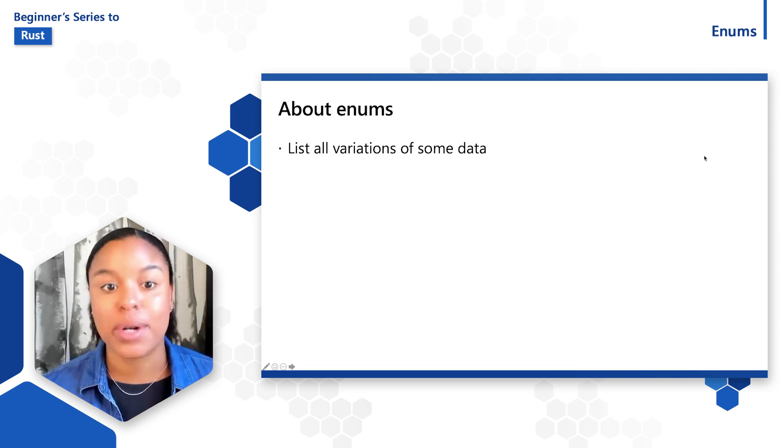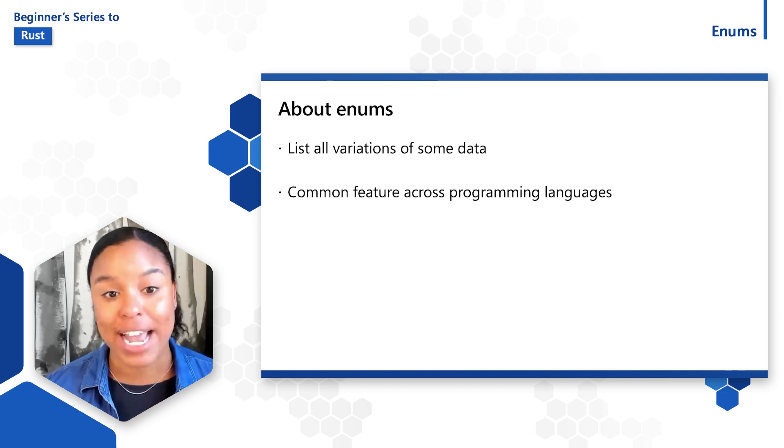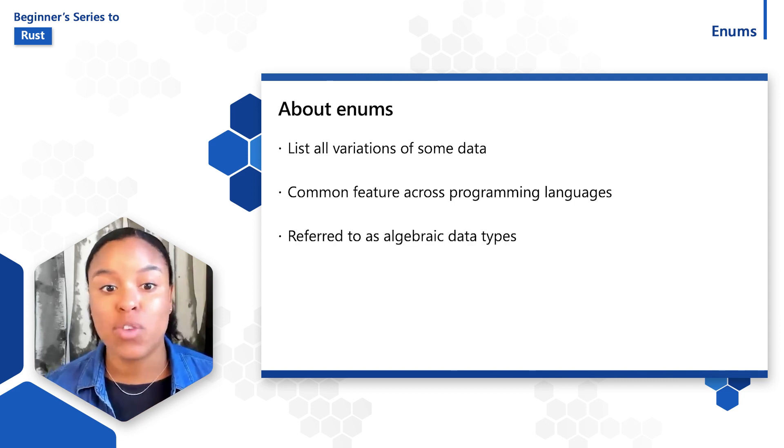Enums are a common feature across programming languages, but their capabilities may differ from language to language, and you'll see how they work in Rust. Enums in Rust are commonly referred to as algebraic data types, which are types formed by combining other types. This data type is common in functional languages such as F-sharp and Haskell.